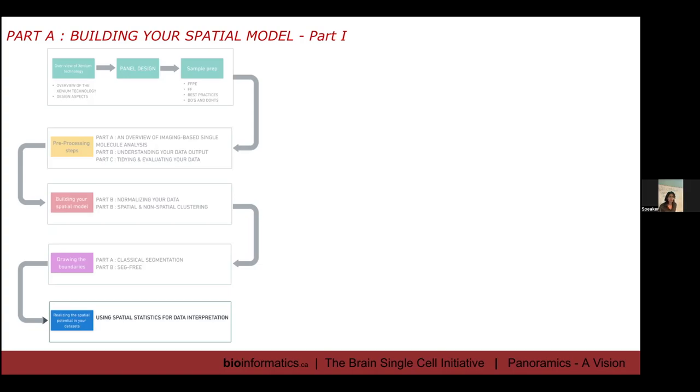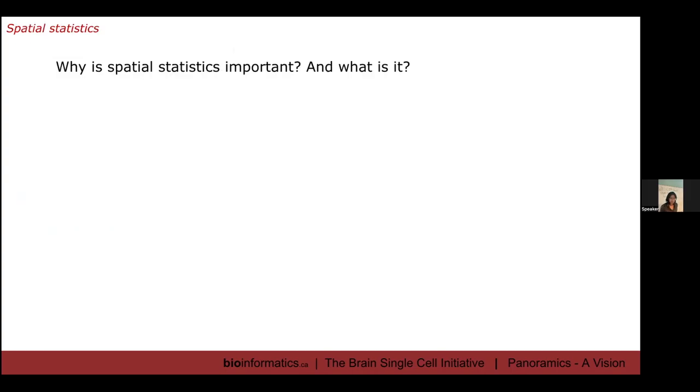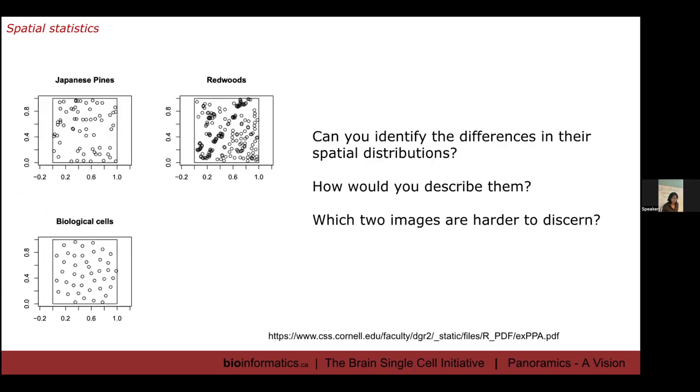But the thing is, how do you conclude if the non-randomness that you see is valid or not? So humans, we are not really good at... we are very good at seeing patterns. But like I said, sometimes we are kind of over generous in what we think is a pattern, because our brain is tuned for it. So for instance, we see spatial patterns everywhere. So a simple question would, would you be able to identify the differences in their spatial distributions from the image that I've shown you? So the bottom image, that is a dispersed image, but that's not random. Over dispersion is not random, like I said. So that is non-random, that is an over dispersed model at the bottom.